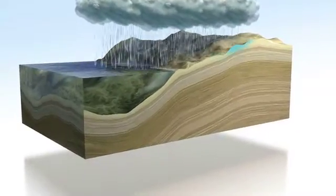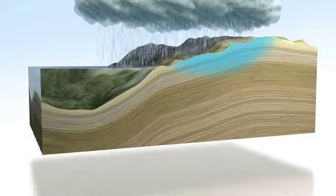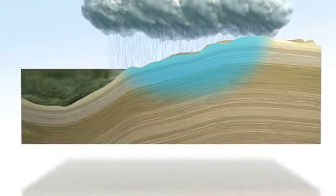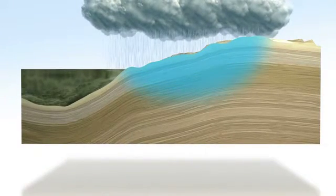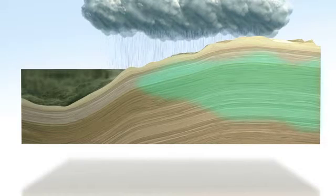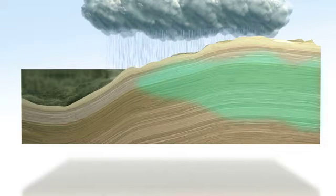When it rains, water percolates through the Earth's surface and becomes trapped in underground layers of rock called aquifers. Currently, this freshwater aquifer is where the majority of our drinking water comes from.